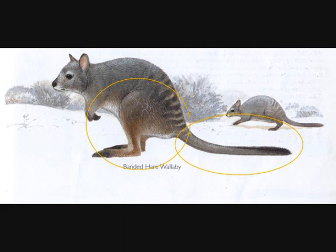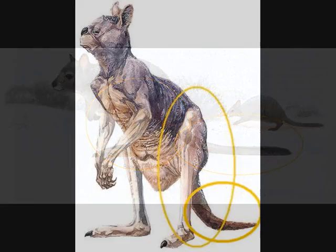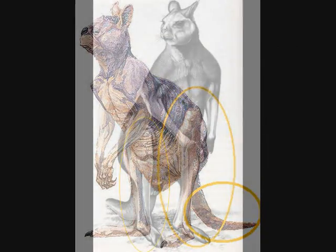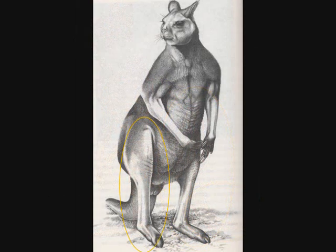Thirdly, both species possess relatively short tails and large, muscled hind legs. This would probably be related to their form of locomotion. Their tails provide balance to the creatures and extra traction when hopping.